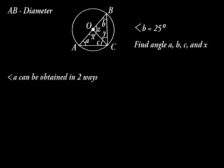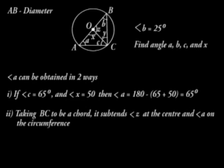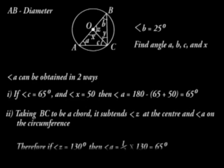Angle A can be obtained in two ways. One: if angle C is 65 and angle X is 50, then angle A is 180 minus 65 plus 50, which is 65 — that is, total angles of a triangle. Taking BC to be a chord, it subtends angle Z at the center and angle A on the circumference. If angle Z is 130 degrees, then angle A is half of 130, which is 65 degrees.